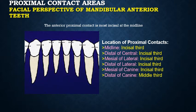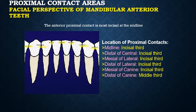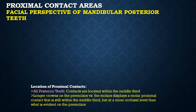For mandibular anterior teeth, the proximal contact areas are in the incisal one-third in the midline — similar to maxillary anterior teeth. Uniquely, all contact areas of mandibular incisors are in the incisal one-third: the distal of the central incisor, the distal of the lateral incisor, and the mesial of the canine. The only difference is the distal of the canine, which contacts the first premolar in the middle third.